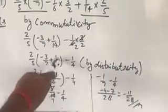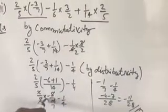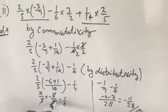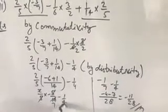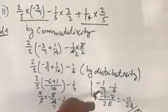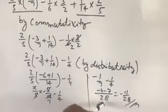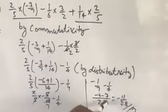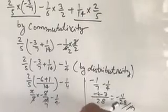Divided by 14, equal to 1. So 2 upon 5 into minus 6 plus 1 — remaining is minus 5 upon 14. The 5s cancel out, giving minus 1 upon 7, then minus 1 upon 7 minus 1 upon 4. Taking LCM as 28: minus 4 minus 7 equals minus 11 upon 28. Answer.